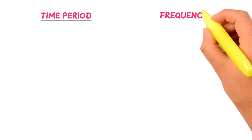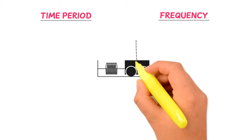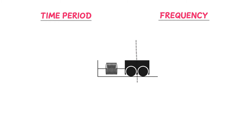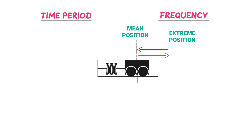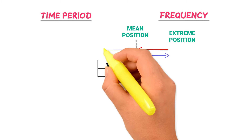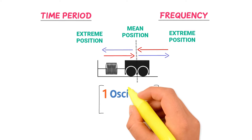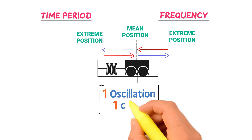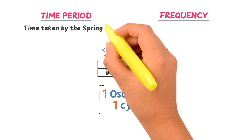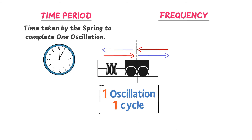Let's consider a mass attached to an elastic spring. If the mass moves from the mean position to the extreme position and back to the mean position, then goes again from the mean position to the extreme position and comes back to the mean position, we say that the spring has completed one oscillation or one cycle. The time taken by the mass to complete one oscillation or one cycle is called the time period.